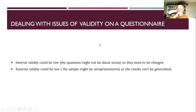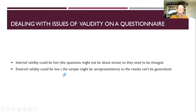A couple of other ways of dealing with validity issues in a questionnaire: internal validity — we look at the questions, and if they're not good questions about stress, we change them. External validity could be low if the sample is unrepresentative — for example, if only students aged 16 to 18 completed the questionnaire, external validity would be low because we can't generalize those findings to the whole population.